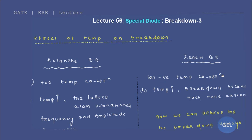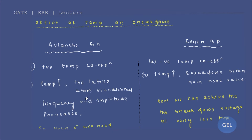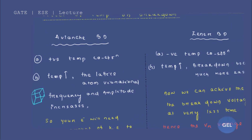Now, these temperature coefficient points are important to remember. The key point is this: in the case of avalanche breakdown, if you increase the temperature, the lattice atom vibrational frequency and amplitude increases. Initially, what used to happen was the electron gained very high kinetic energy, collided with the lattice atom, and the heat energy from that collision broke the covalent bond — that breakdown is known as avalanche breakdown.